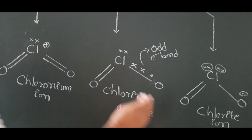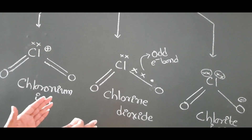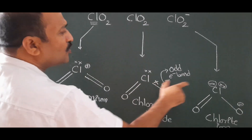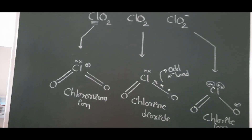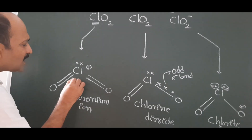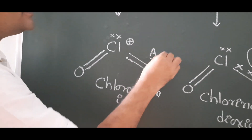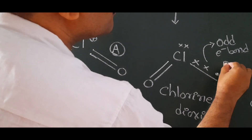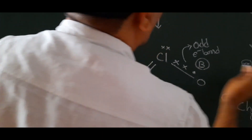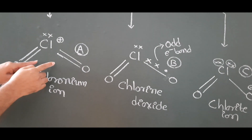Our target here is the bond angle comparison — what is the name of each molecule and how many lone pairs are on the central atom. Let the bond angle of ClO₂⁺ be A, the bond angle of ClO₂ be B, and the bond angle of ClO₂⁻ be C. What is the relative order?